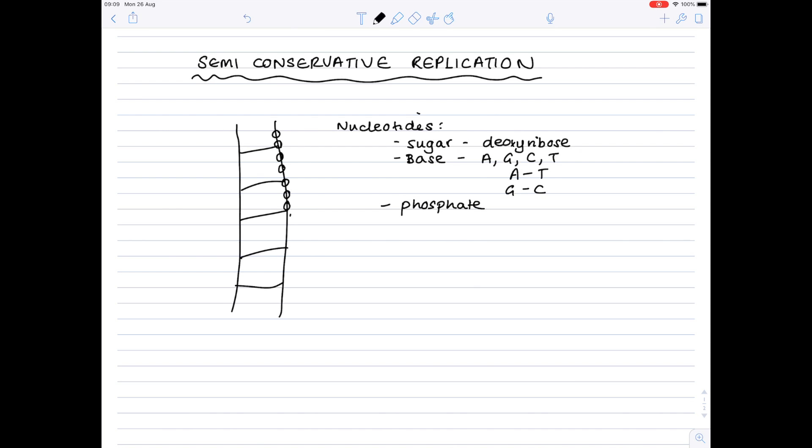They'll alternate down here, and the rungs of the ladder are where you find your bases. So if this was an A, it would be bound to a T; this was a C, it would be bound to a G, and so on. That's how you form your DNA, and remember it is a double helix, which basically means that it wraps around itself a little bit like a roller coaster.